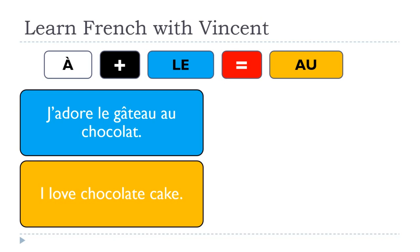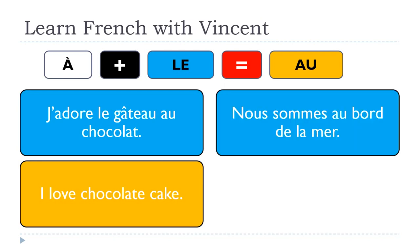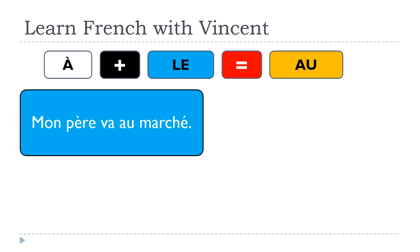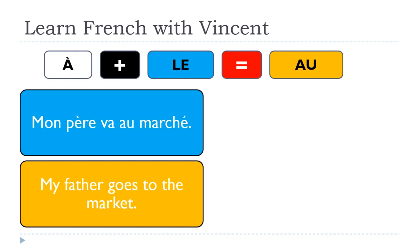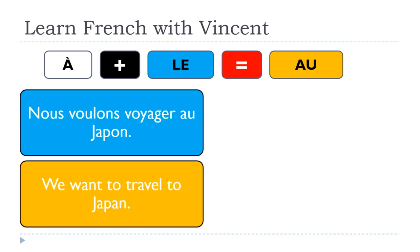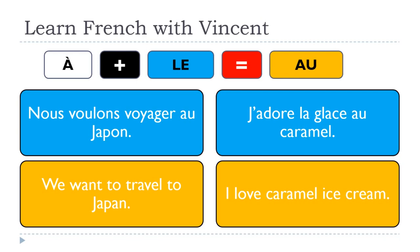'J'adore le gâteau au chocolat' — I love chocolate cake. 'Nous sommes au bord de la mer' — We are by the sea. 'Mon père va au marché' — My father goes to the market. 'Nicolas ne veut pas aller au magasin' — Nicolas doesn't want to go to the store. 'Nous voulons voyager au Japon' — We want to travel to Japan. 'J'adore la glace au caramel' — I love caramel ice cream.